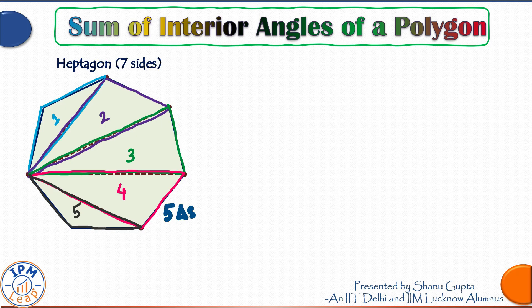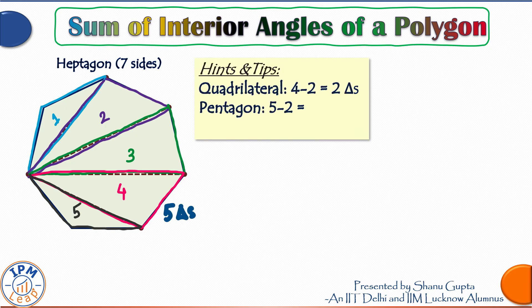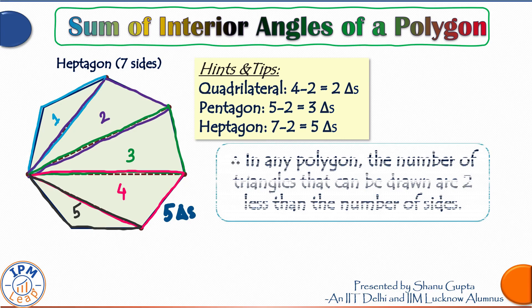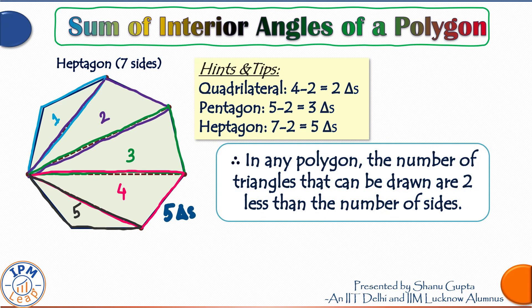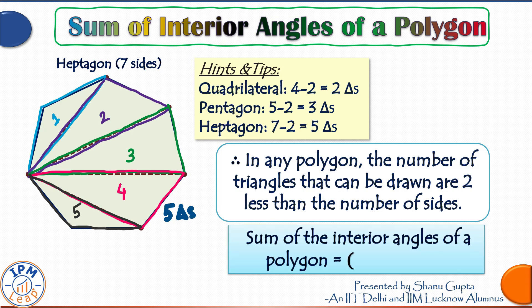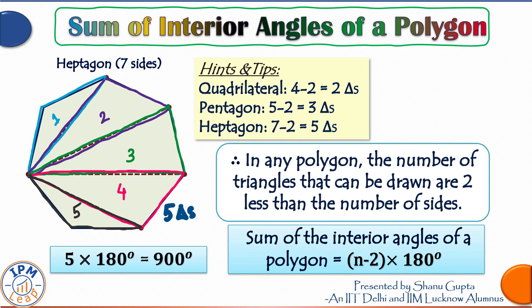Can you notice a pattern? In the quadrilateral you could form four minus two, that is two triangles. In the pentagon there were five minus two, that is three triangles. In the heptagon there are seven minus two, that is five triangles. This is a very important point: in any polygon, the number of triangles that can be drawn are two less than the number of sides. An n-sided polygon can be divided into n minus two triangles, each contributing 180 degrees. Therefore the sum of interior angles of a polygon is (n − 2) × 180 degrees. For a heptagon it is 5 × 180 = 900 degrees.